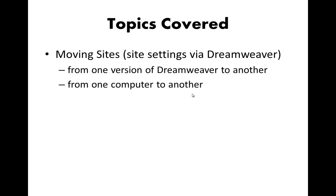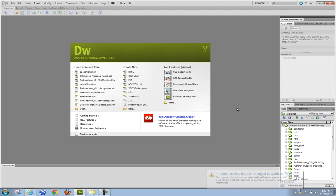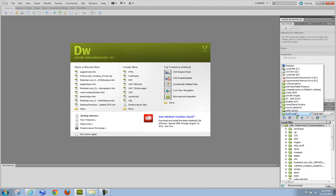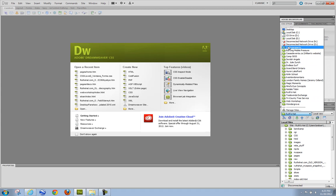I have CS5 on one of my machines, and this is where I predominantly worked on most of my sites. I want to move those site definitions from Dreamweaver CS5 on this machine to Dreamweaver CS6 on another machine. You can adapt what I'm showing you to a variety of versions on Mac or PC — the settings look pretty similar going all the way back to CS3. Each of these sites has a local root folder definition and a remote server connection, and I don't want to redo that almost 20 times. Here's how you solve this issue.